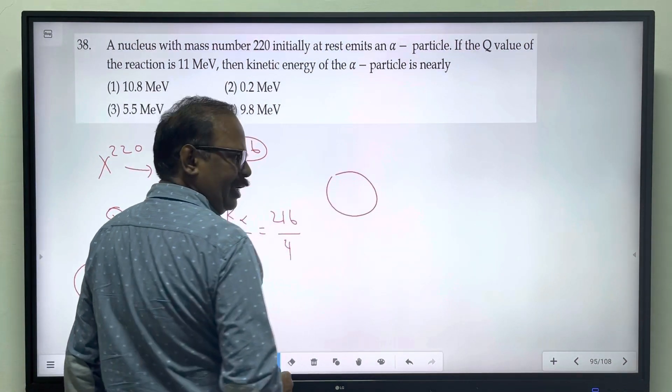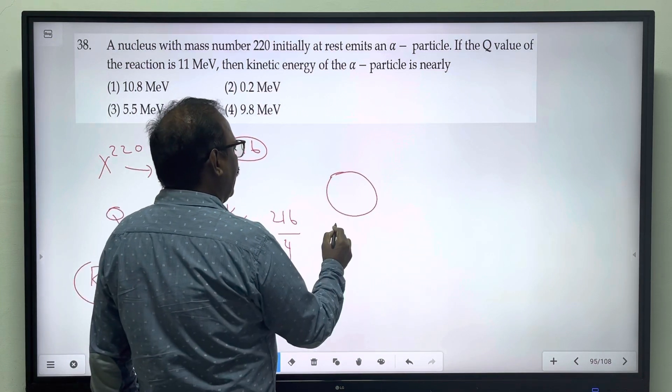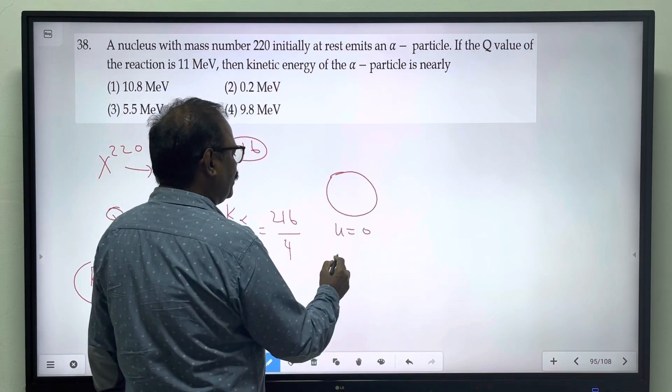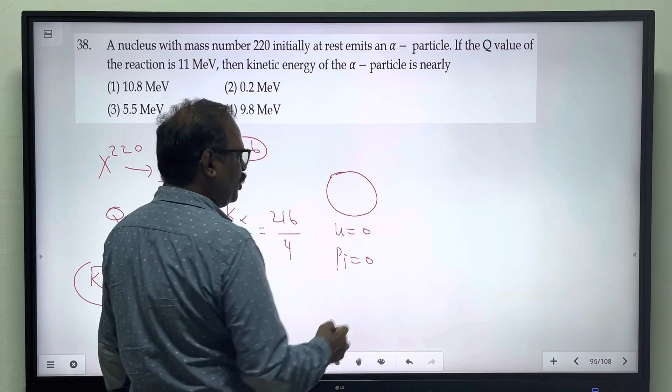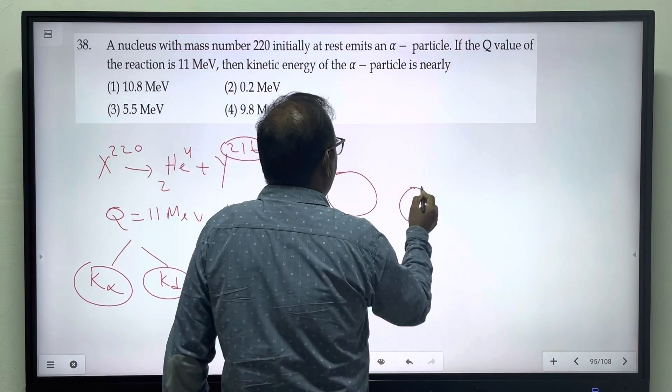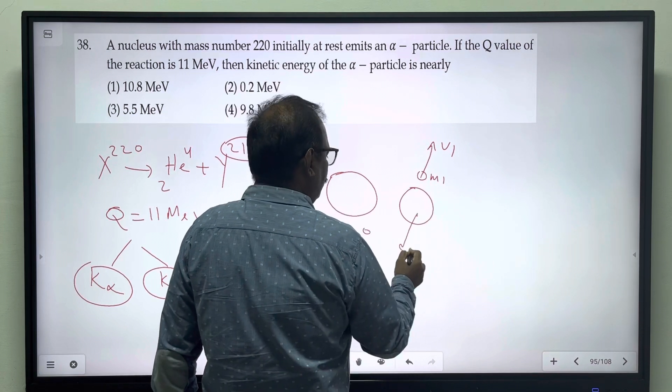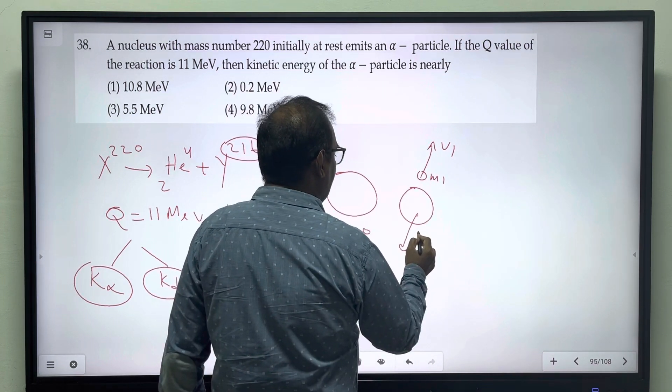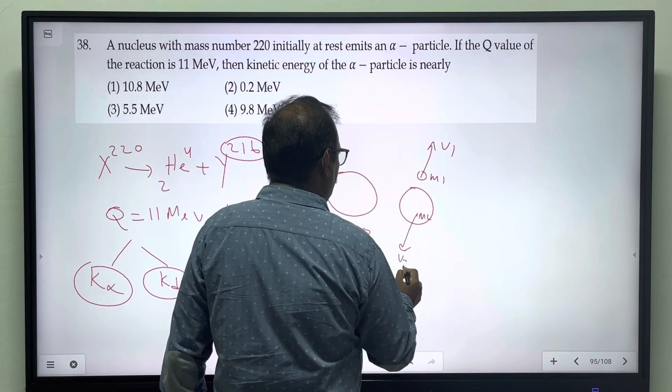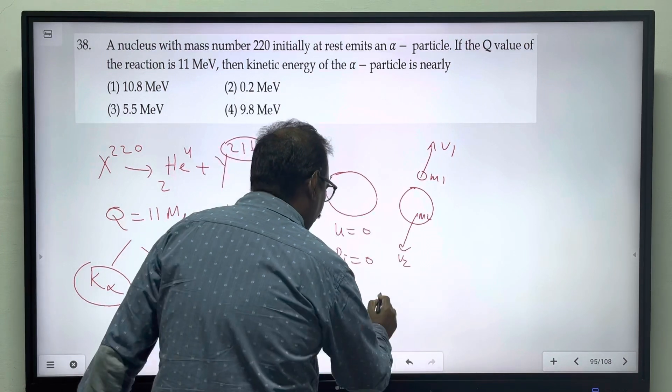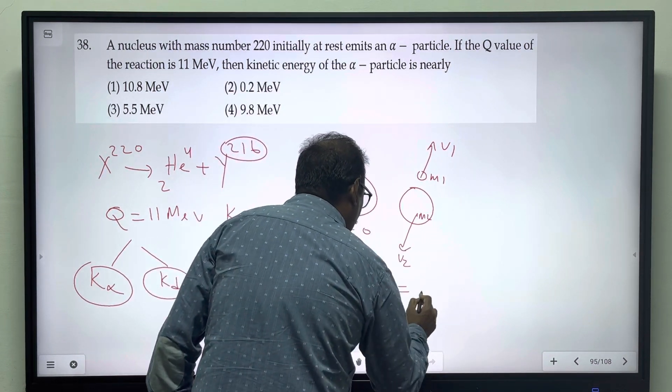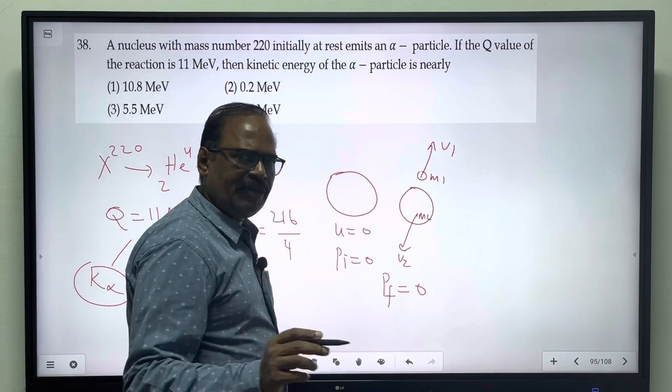In the nucleus, initially, initial velocity is 0, initial momentum is 0. In the nuclear fission, the alpha particle has m1, v1. The daughter nucleus has mass m2, velocity v2. The final momentum should also be equal to 0 because of law of conservation of momentum.